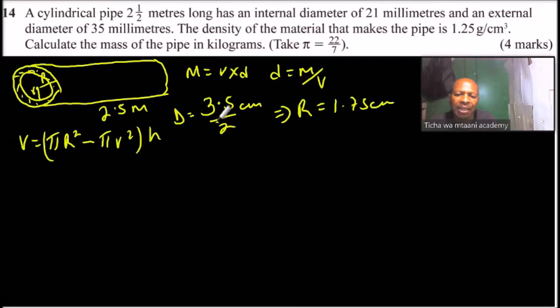The same case applies to the inner diameter. So it is 2.1 divided by 2, which implies that the radius, which we denote by a small r, is 1.05 centimeter.